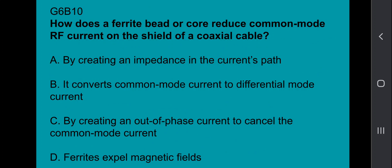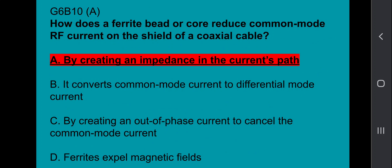G6B10: How does a ferrite bead or core reduce common mode RF current on the shield of a coaxial cable? By creating an impedance in the current's path.